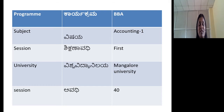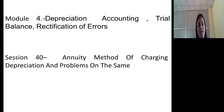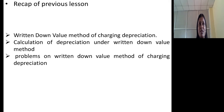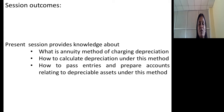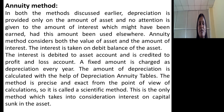Hello students, welcome back to the 40th session on Accounting 1. In this session, we are going to concentrate on the third method of charging depreciation, that is the annuity method of charging depreciation. You know that in the previous session, we discussed in detail the diminishing value method of charging depreciation, calculation of depreciation under that method, and even solved a problem on it. At the end of this session, you will come to know what is the annuity method of charging depreciation, how to calculate depreciation under this method, and how to pass entries in the asset account under this method.